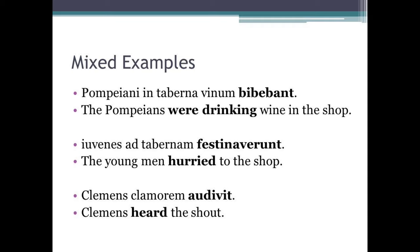Finally, before I set you some examples to do, let's have a look at some mixed examples of both tenses in use. 'Pompeiani in taberna vinum bibebant' — the Pompeians were drinking wine in the shop. 'Iuvenes ad tabernam festinaverunt' — the young men hurried to the shop. 'Clemens clamorem audivit' — Clemens heard the shout. Notice the first sentence uses the imperfect tense, bibebant, and the next two have perfect tense verbs with festinaverunt and audivit.